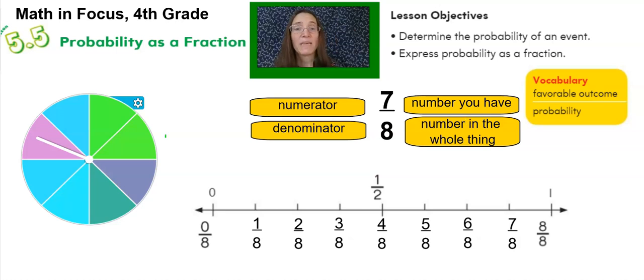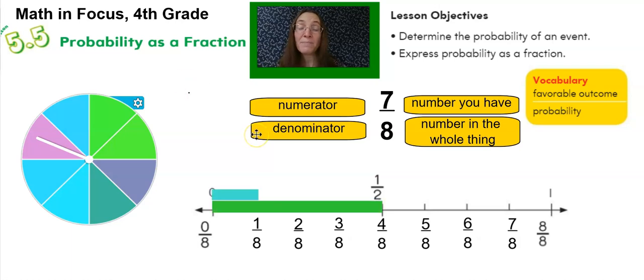For example, if I was to compare one-eighth to one-half, a half is much bigger than an eighth. Let me show you. In the number line below, you can see that the blue one-eighth bar is way less than the green one-half bar.